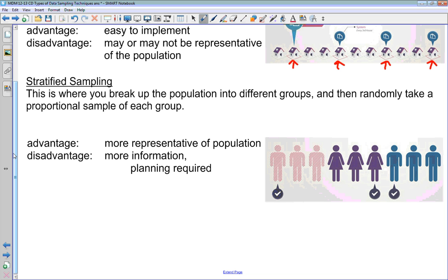So an advantage here, this is more representative of the population. Men are two-thirds of our population, so they're two-thirds of our sample. It does require more information at the beginning. You have to know something about your population in order to set up your sample, which you don't always have. As well, it requires a little bit more planning to get this initial information and make use of it when you're setting up your sample.